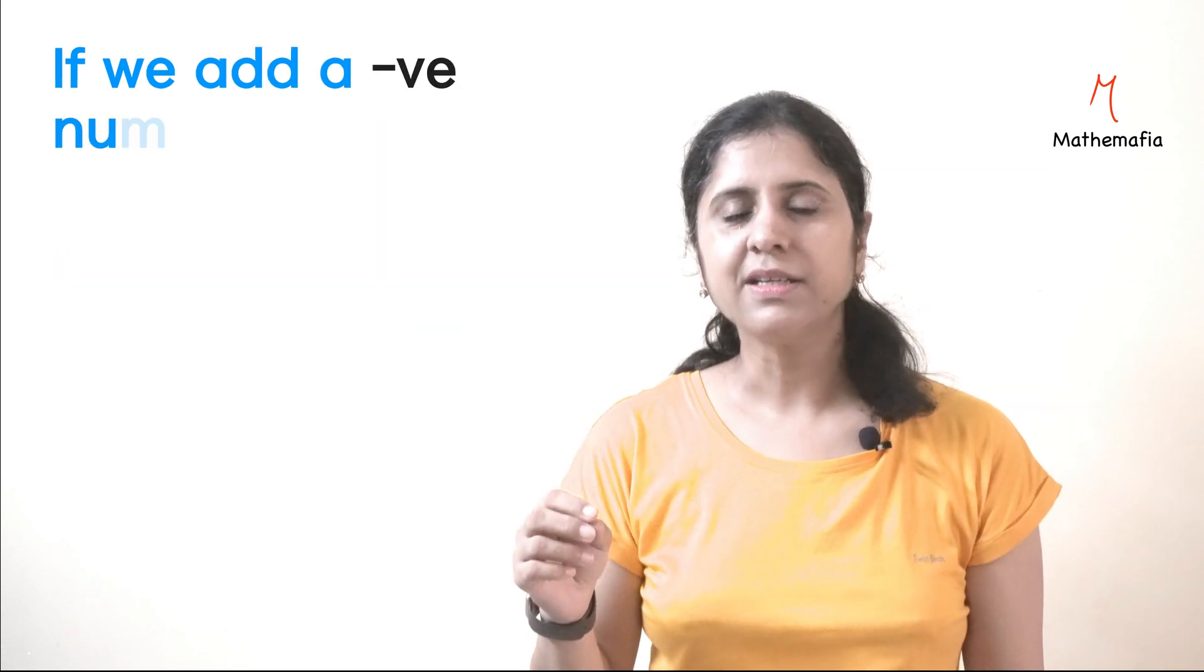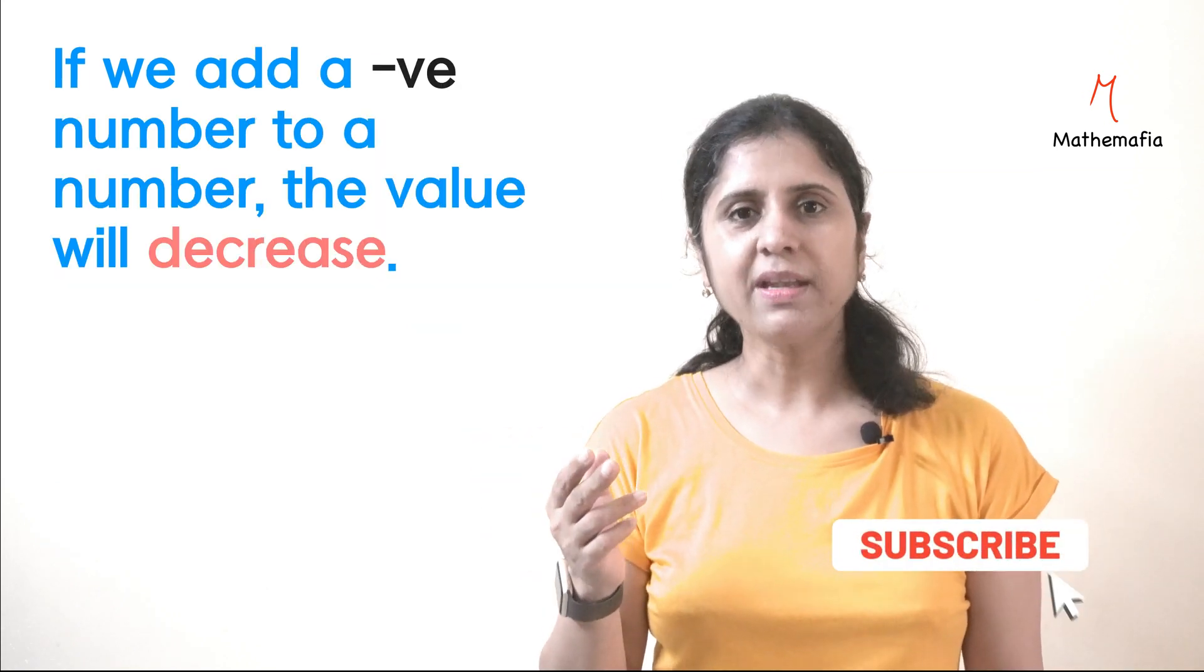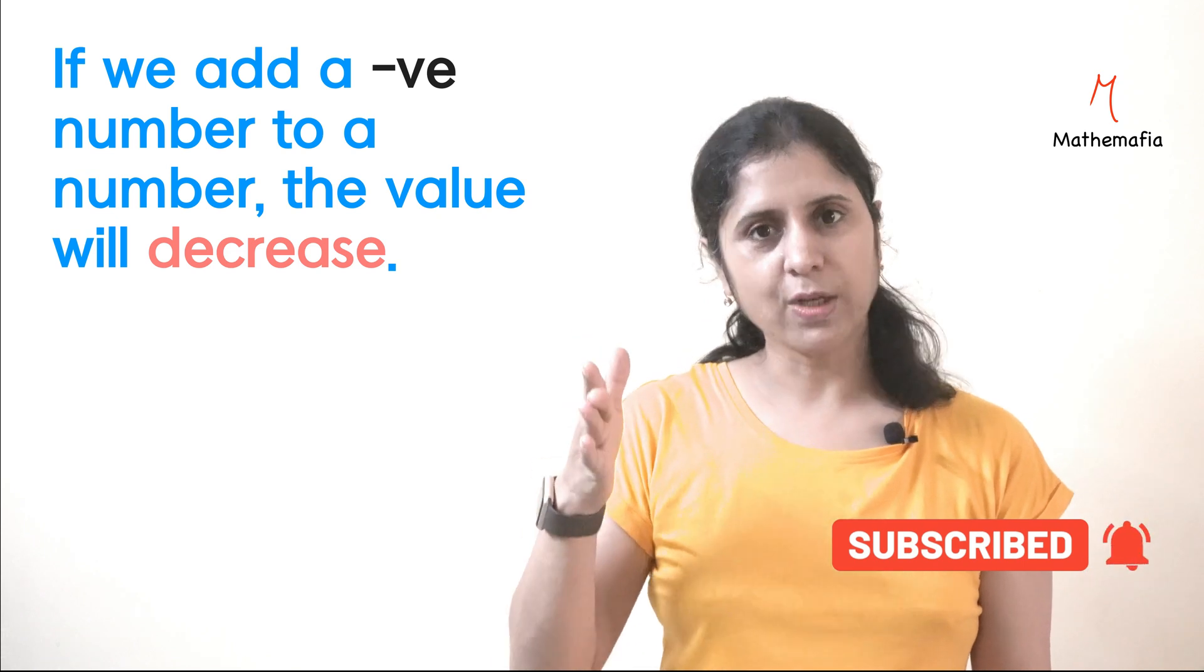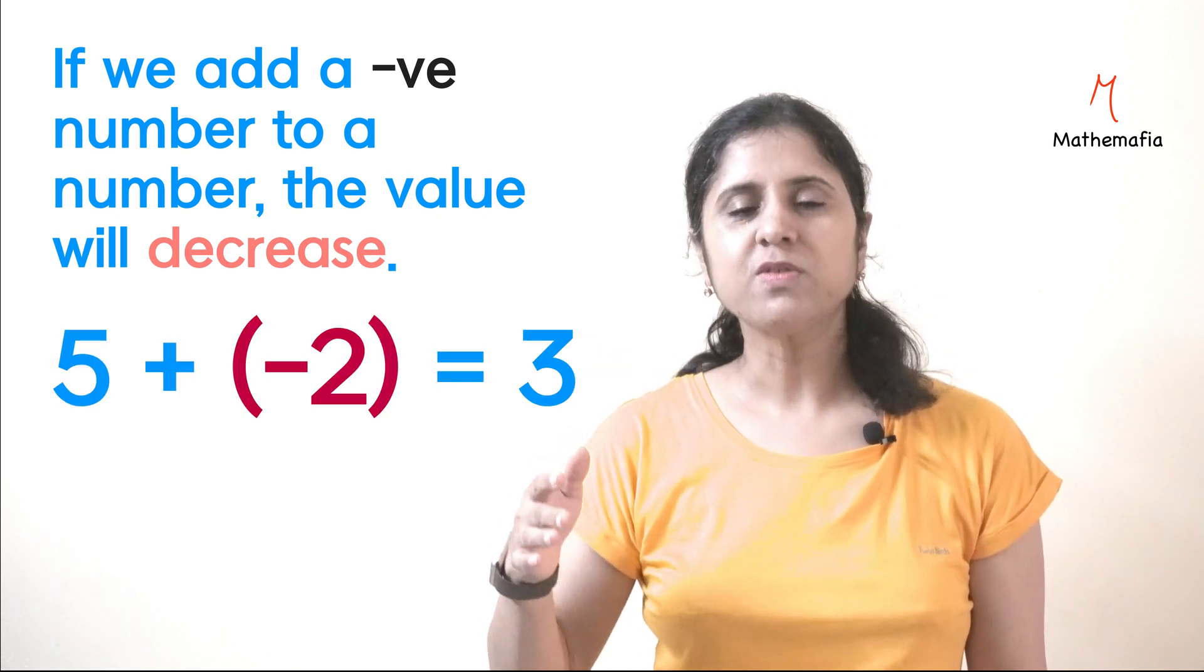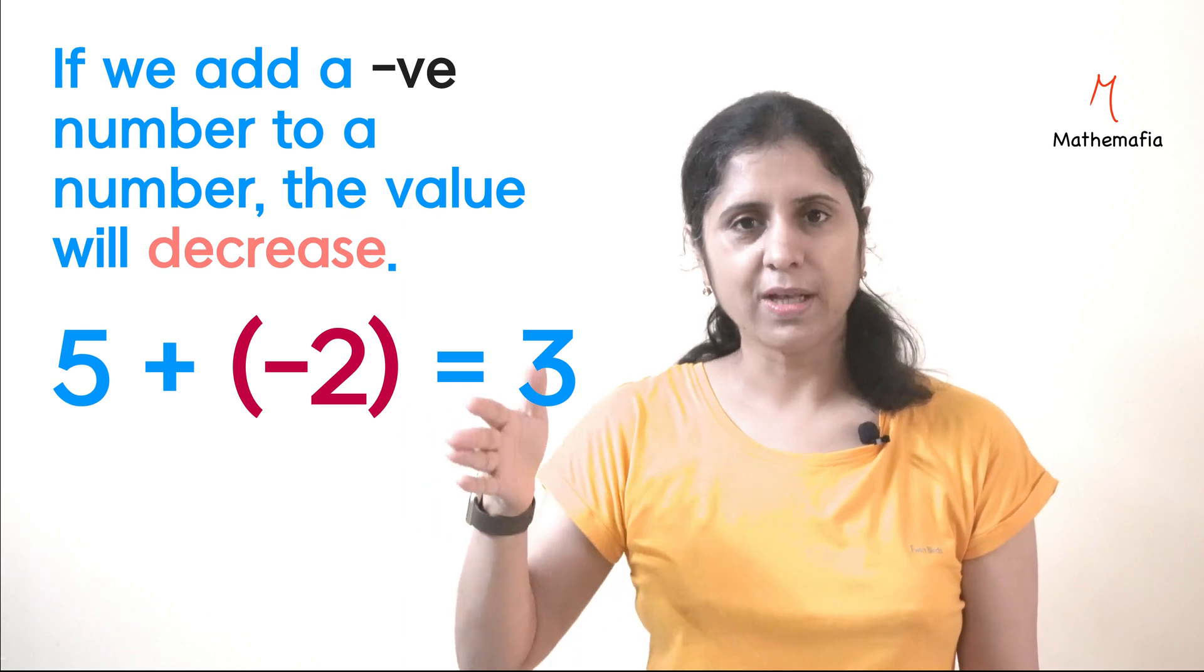On the other hand, if we add a negative number to a number, the value will decrease. For example, 5 + (-2) = 3. The value has decreased.